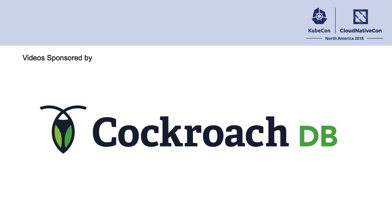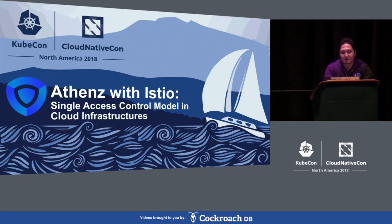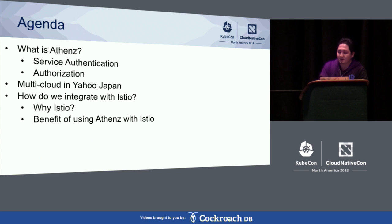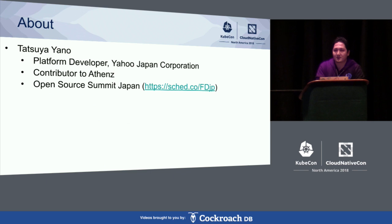Hi, everyone. Thank you for joining me today. Today I'm going to talk about Athens with Istio, single-axis control model in cloud infrastructure. I'd like to start off by telling you about Athens and show how we use multi-cloud in Yahoo Japan, then show benefits of using Athens with Istio. My name is Tatsuya Yano. I'm a platform developer in Yahoo Japan. I've been contributing to Athens and have a session in Open Source Summit Japan.